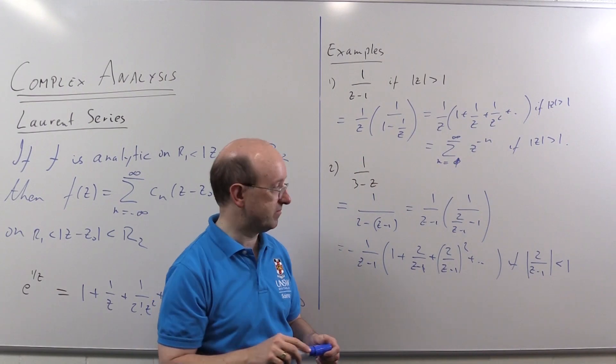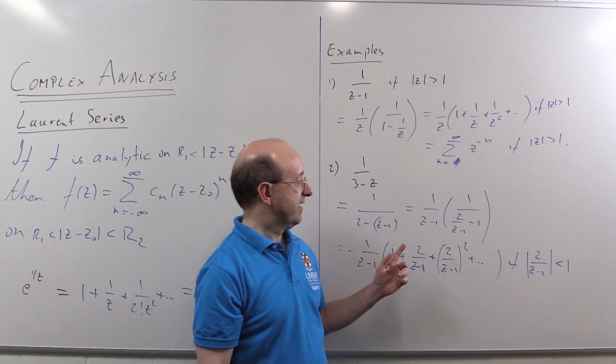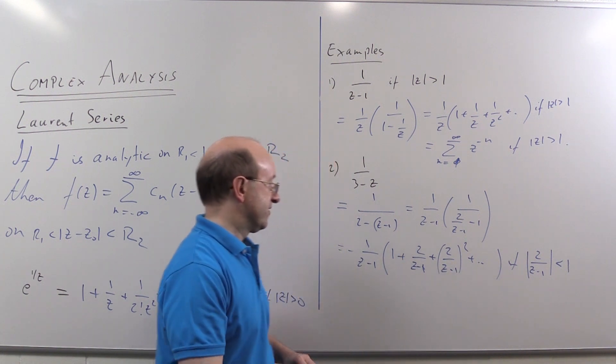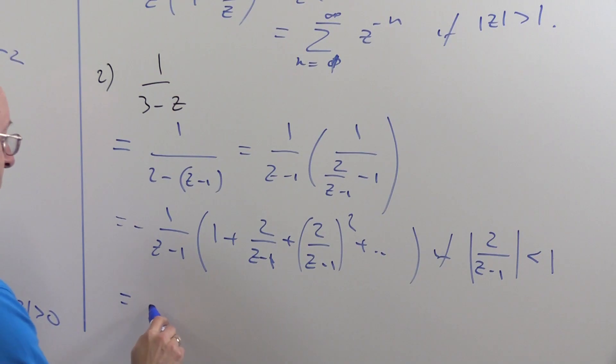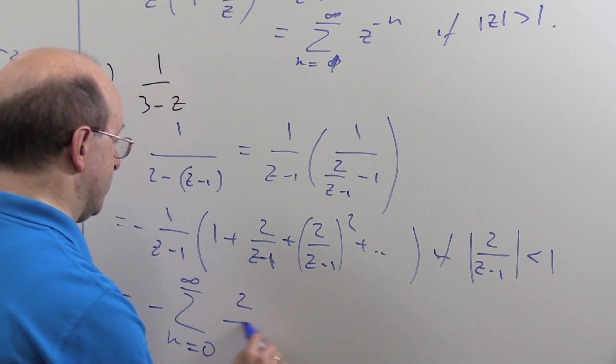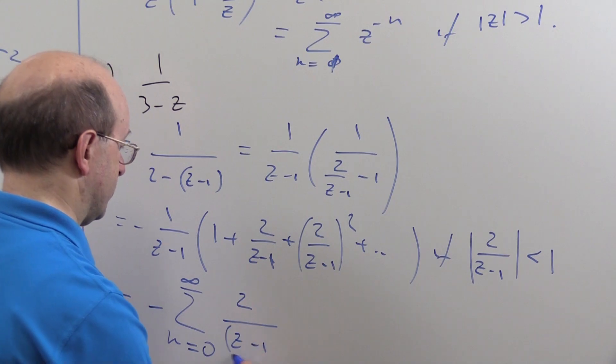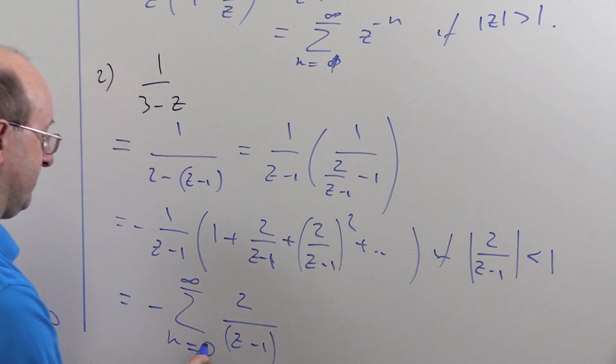And then we can rearrange this appropriately. We'll get, we'll take the minus sign out the front, sum from n equals, well we'll write it in negative powers, zero to minus infinity. We've got two to some power over z minus one to some other power. In fact we don't want zero here.